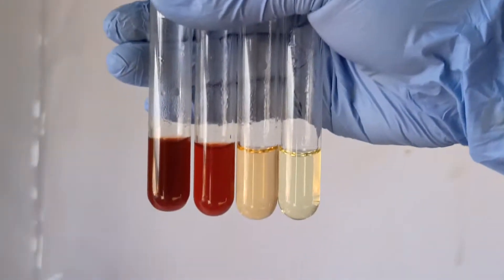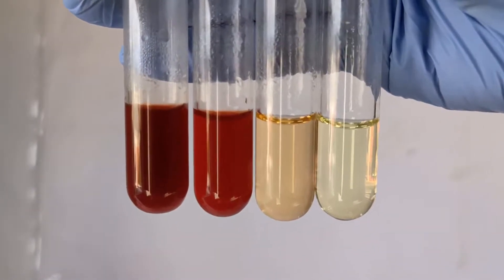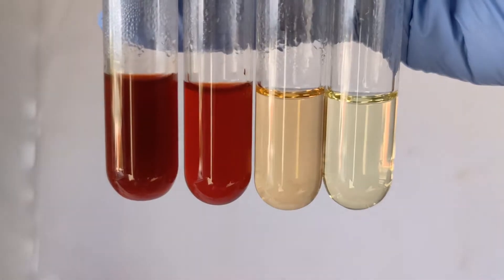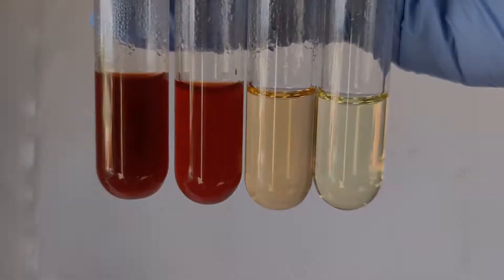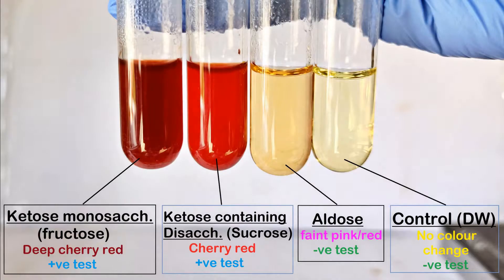The control tube, as expected, shows no significant change in the color of its contents and only retains the original reagent color, which is a faint yellow. This is all about the Seliwanoff's test for ketose sugars.